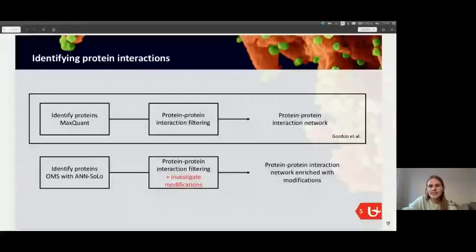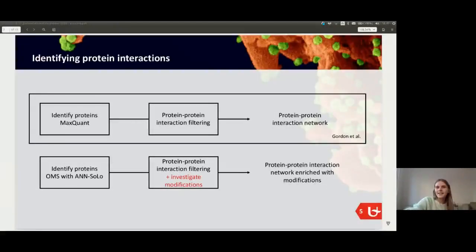After the proteins are identified, the protein interactions need to be filtered in order to create a protein-protein interaction network. We used a different method to identify the proteins, but we did use a very similar protein-protein interaction filtering method. And because of the technique we used, we were also able to investigate modifications. In the original analysis, only two modifications were considered and those were both artificial modifications. But we were able to investigate a lot of interesting modifications and we could enrich our protein-protein interaction network with those modifications.